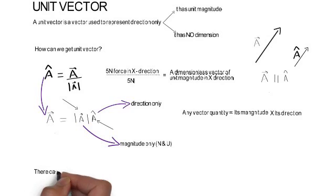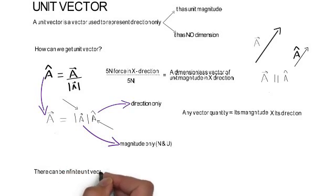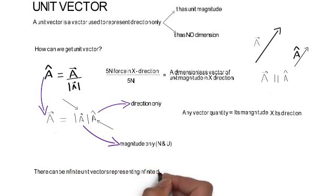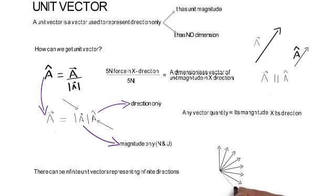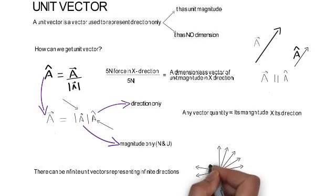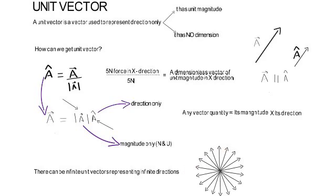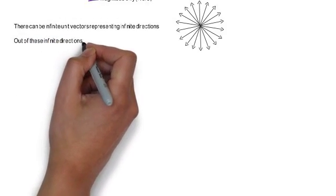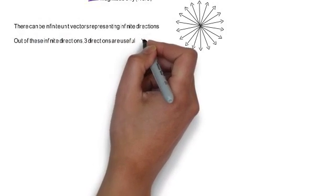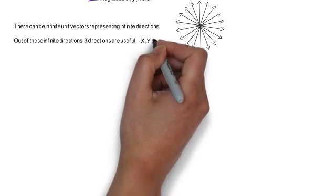There can be infinite unit vectors representing infinite directions. For example, we can draw many unit vectors with all of them having the same magnitude but different directions. So if we want, we can draw a unit vector in every direction. Out of these infinite directions, three directions are useful: the x, y, and z directions.